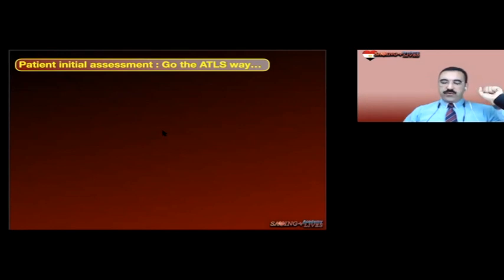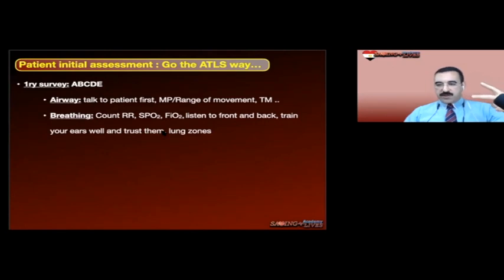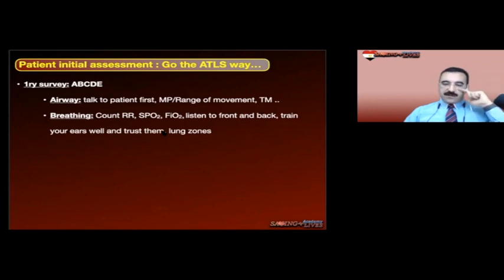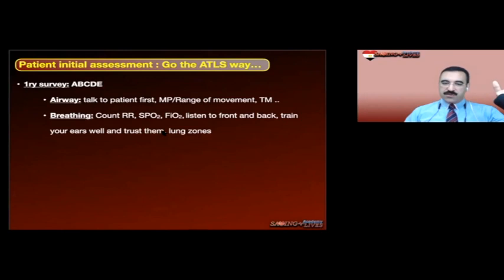Now we go through the ABCDE survey — my primary survey for every patient. A for Airway: the trick is always talk to your patient. If the patient is talking, he is conscious enough, can verbalize, pushing enough tidal volume via his vocal cords — and you can judge his mental state: is he confused, delirious? Once the patient is talking, have a quick look at his Mallampati score, range of movement, thyromental distance — quick airway assessment — because you may need to intubate in a minute or two.